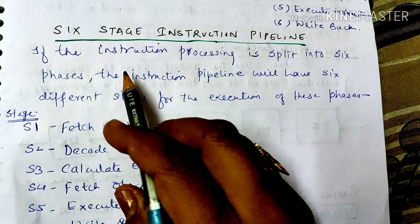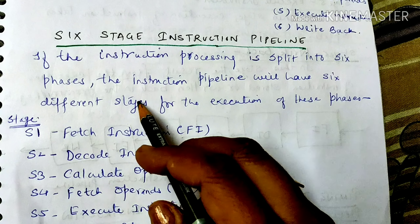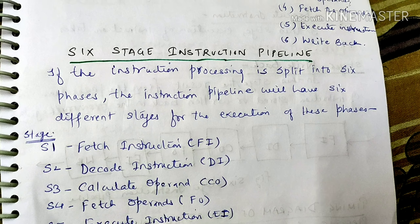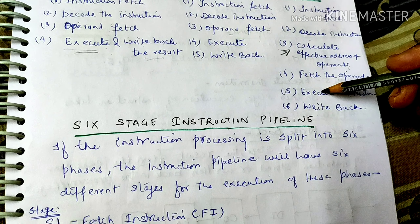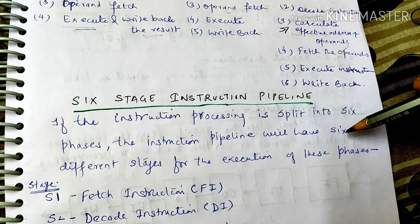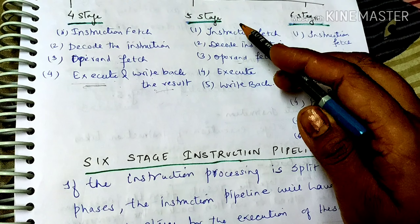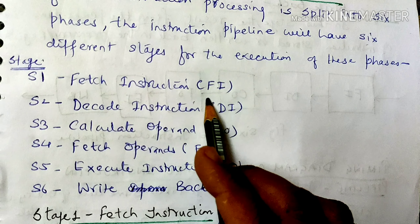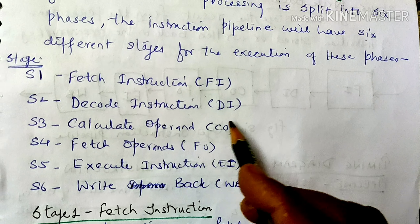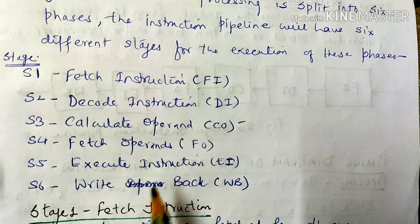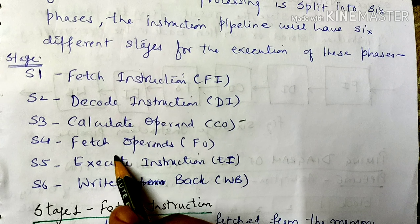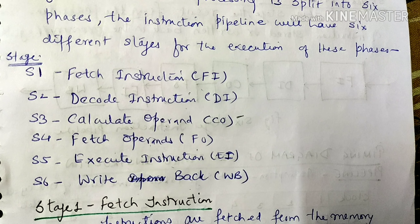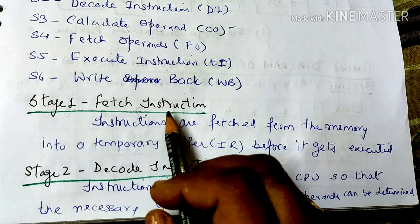If the instruction processing is split into 6 phases, the instruction pipeline will have 6 different stages for execution of these phases. The 6 stages are: fetch instruction, decode instruction, calculate operands, fetch operands, execute, and write back.